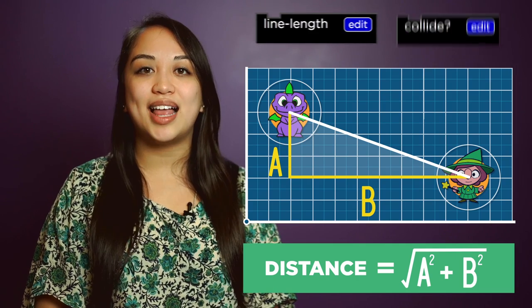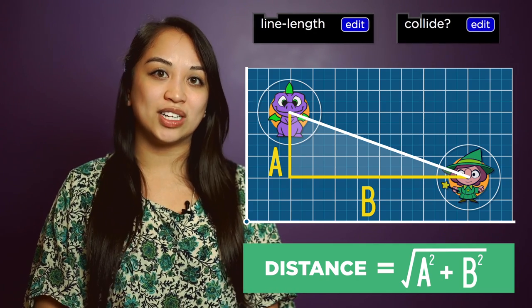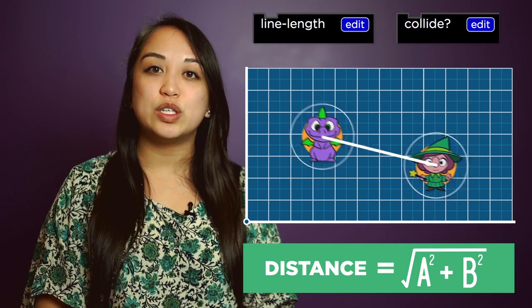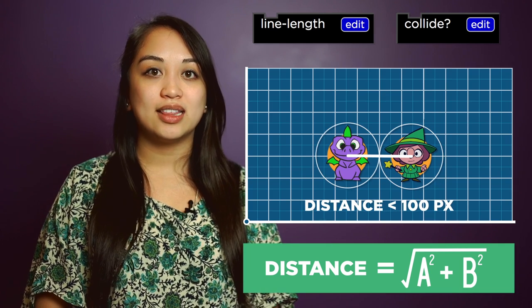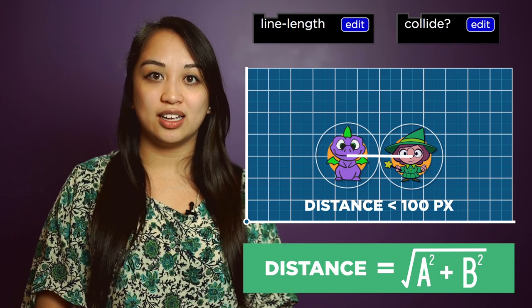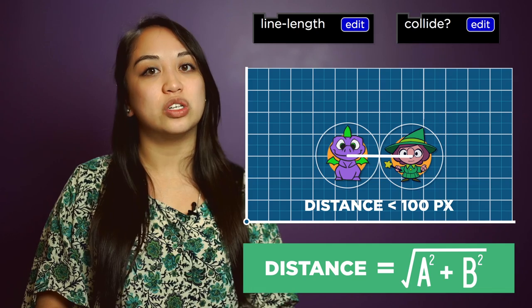Next, you'll update the collide function to use the distance function. If the distance between two sprites is less than 100 pixels, the sprites are close enough to be touching, and the collide function should return true.